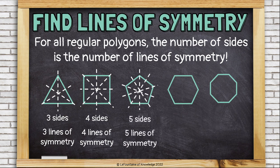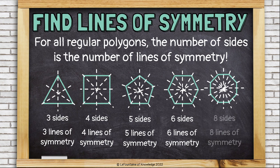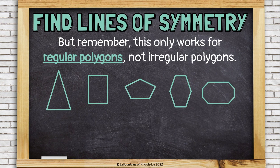This regular hexagon has six sides, so it will have six lines of symmetry. And this regular octagon has eight sides, so it will also have eight lines of symmetry. Remember, this only works for regular polygons when they have congruent sides and congruent angles.